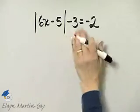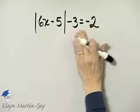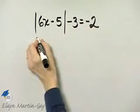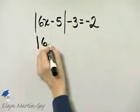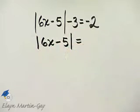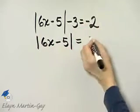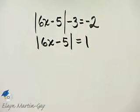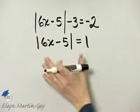To do so, I will add 3 to both sides of the equation. So I'll have the absolute value of 6x minus 5 is equal to negative 2 plus 3, which is a positive 1. So I did isolate the absolute value.